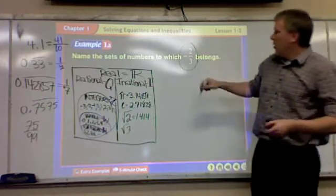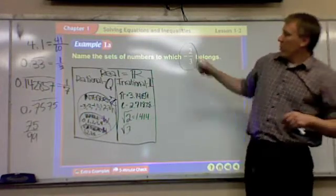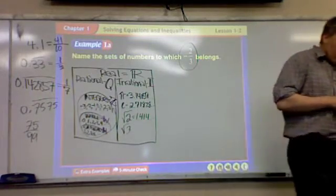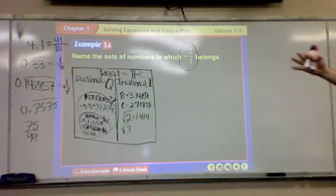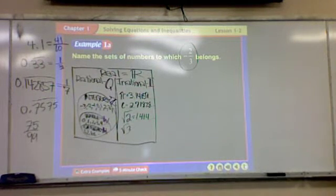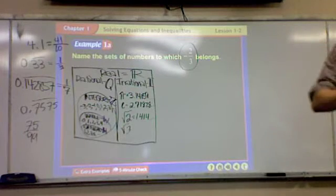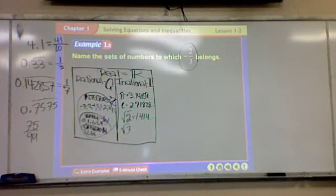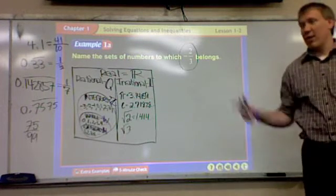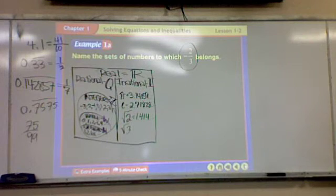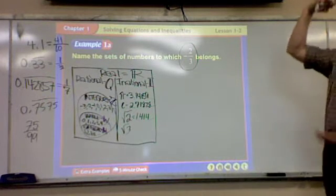All right, so let's go back to this problem. What sets does this number belong to? What kind of number would you call it if I just asked you what kind of number is that? Fraction. It's called a fraction. Which thing, the official definition was, it's a fraction. Rational. Rational means it's a fraction.